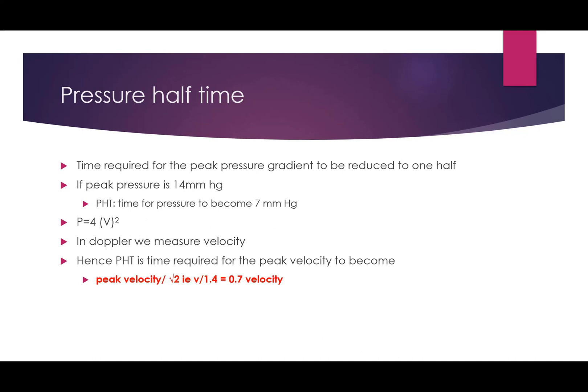To find out the pressure halftime from velocity, when we apply Bernoulli's equation P = 4V², we derive that pressure halftime is the time required for the peak velocity to become peak velocity divided by the square root of 2 — that is, peak velocity divided by 1.4, which equals 0.7 times the peak velocity.